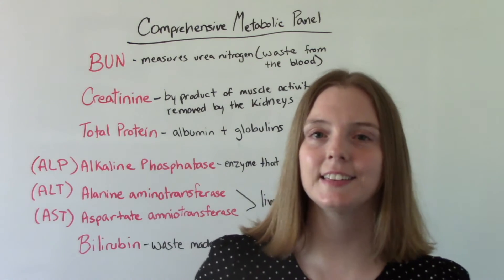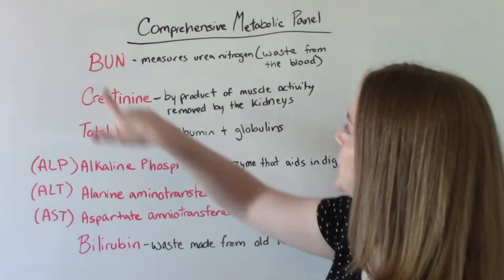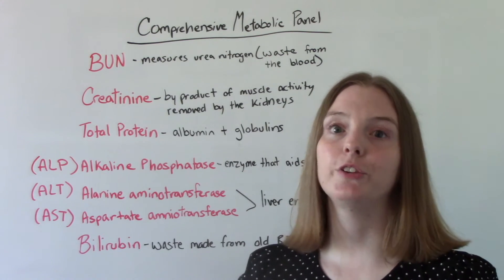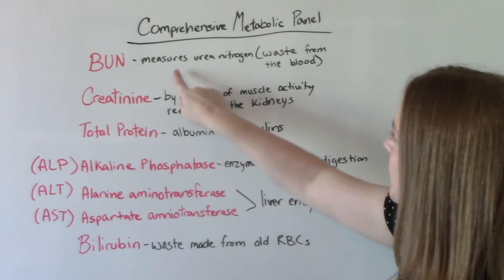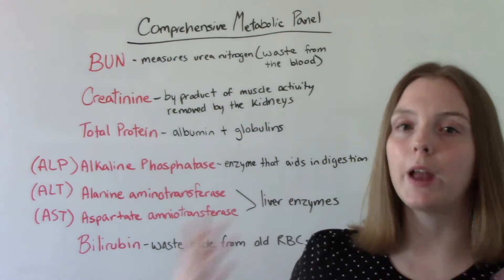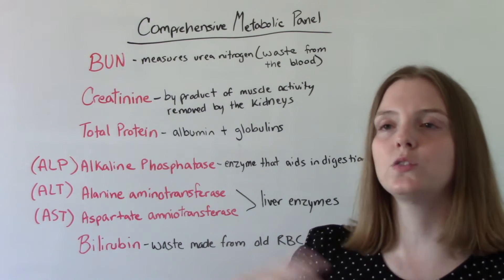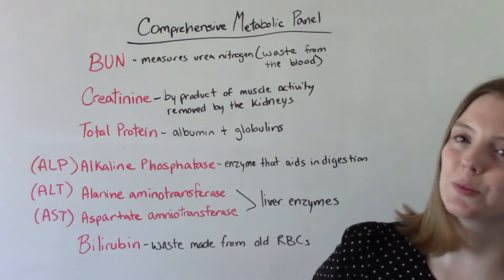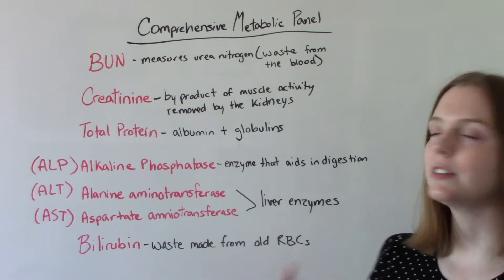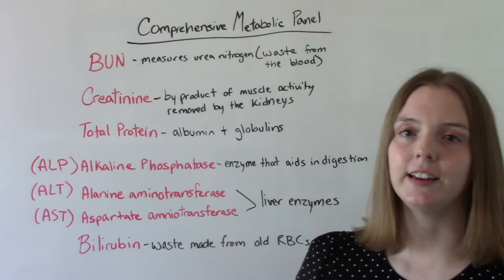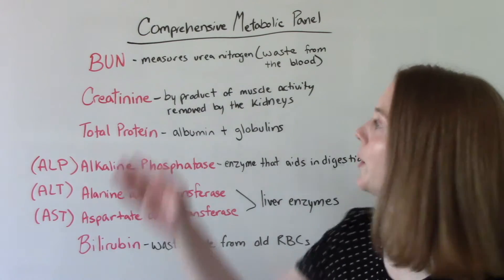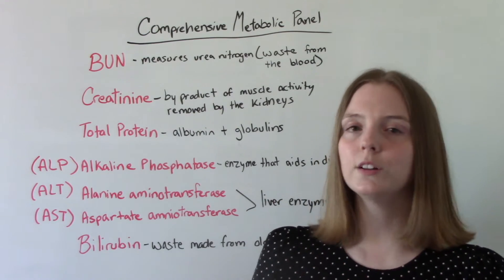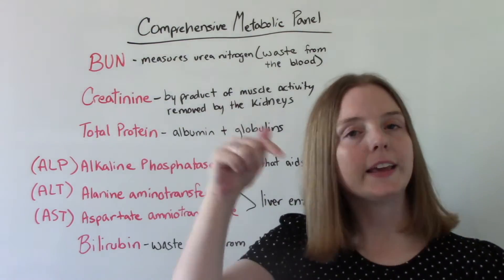Some other things that a CMP looks for: first, we're going to look at your BUN and your creatinine. Your BUN and creatinine tell us a lot about how well the kidneys are functioning. The BUN measures urea nitrogen, which is a waste product from the blood that gets filtered out through the kidneys when they are functioning normally. Creatinine is also a waste product — it's a byproduct of normal muscle activity, also removed by the kidneys. If the kidneys are not working well, we're going to see these levels increase, which is a sign of a kidney problem. I have a whole other video on BUN and creatinine linked below.